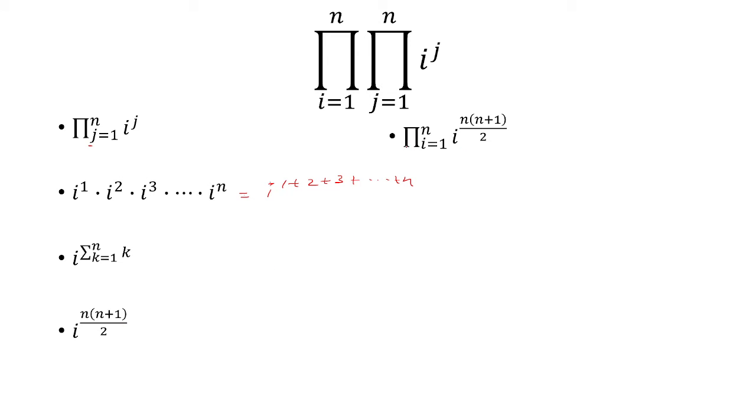Now we're going to apply the outside product to this. The only index here is i. So when i equals 1, we have 1 to that exponent. i equals 2 is 2 to the exponent, all the way up to n to that exponent.